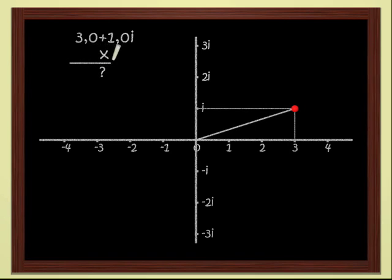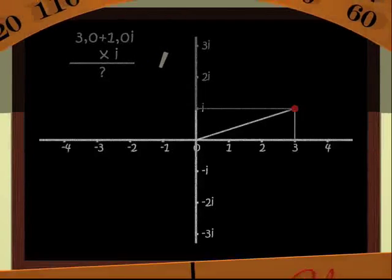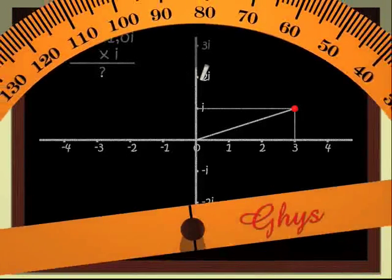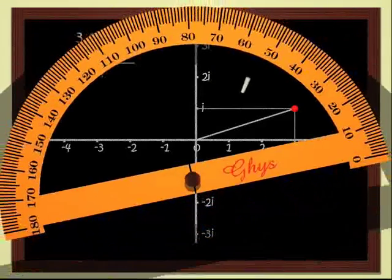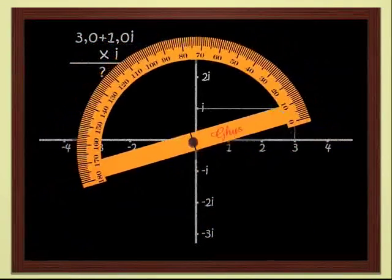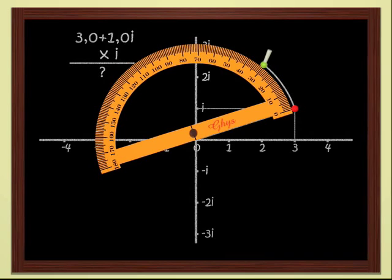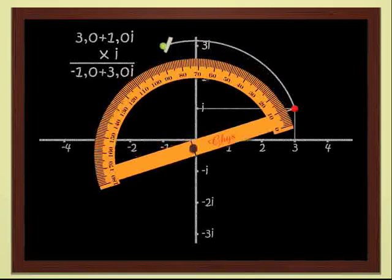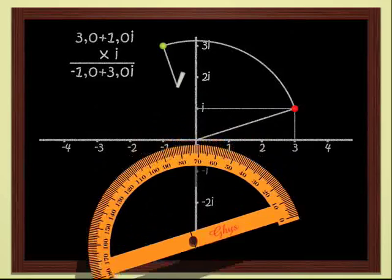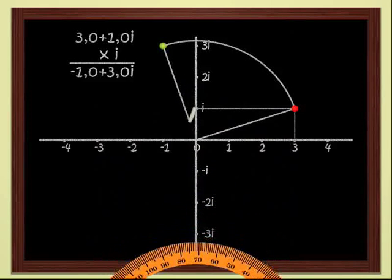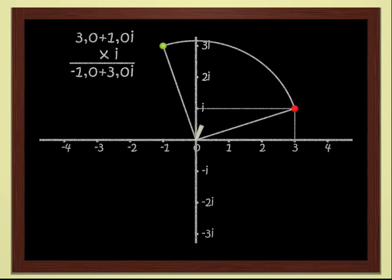Multiplying by i is not difficult either, since we know that i corresponds to a quarter turn. In order to multiply 3 plus i by i, we just have to rotate by a quarter turn. We get minus 1 plus 3i. Not so complicated, these complex numbers.